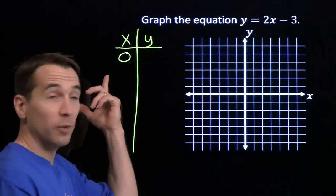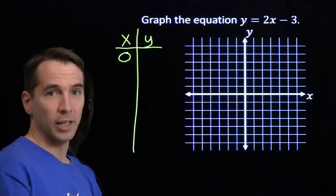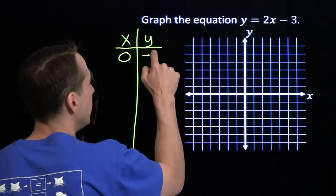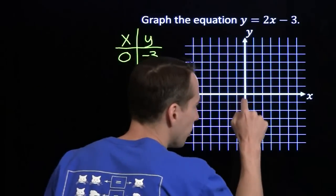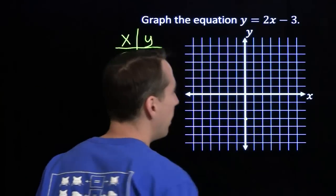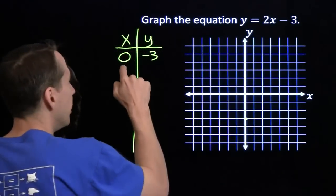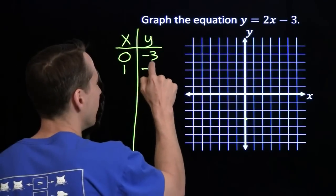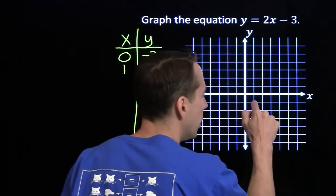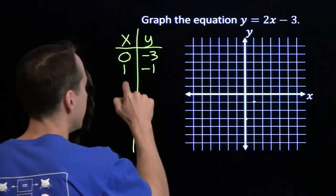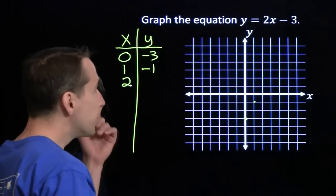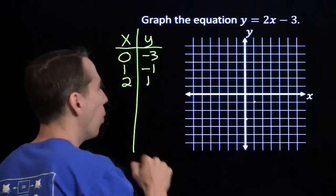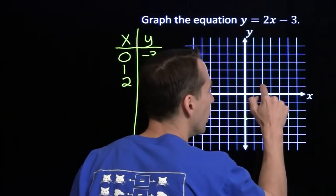I'm going to start off by picking a value of x and finding the corresponding value of y. So I stick x equals 0 in there, get y is 0 minus 3 — that's negative 3. That tells you the point (0, -3) is on the graph. Now if I put in x equals 1, I'll get y is 2 minus 3, that gives us negative 1. That tells me (1, -1) is on the graph. Stick in x equals 2, I'll get y is 4 minus 3, that gives us 1. So the point (2, 1) is on the graph.